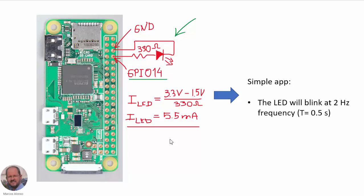We have used a 330 ohm resistor in order to have enough current through the LED — this is the typical value. To calculate the current circulating through the LED, we remember that the output of the Raspberry Pi at digital high is 3.3 volts. The voltage across the diode is going to be something like 1.5 volts, so with a 330 ohm resistor we will have a current through the LED of around 5.5 milliamps, which is good enough for a good brightness. Our objective is to make the LED blink at a frequency of 2 Hz, or equivalently with a period of 0.5 seconds.